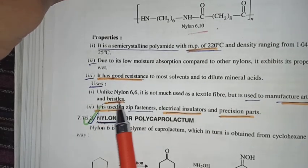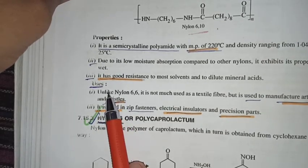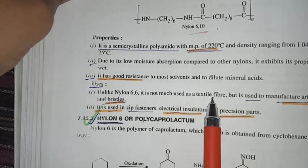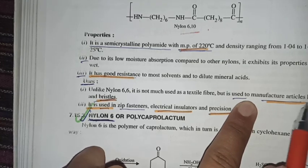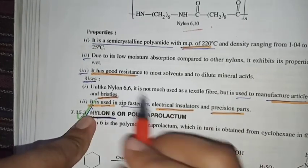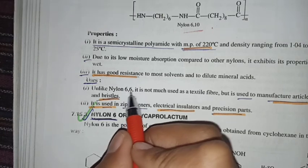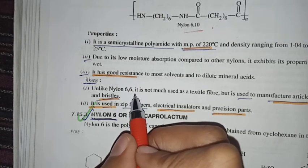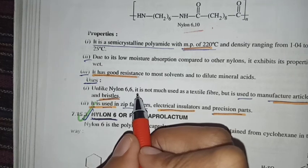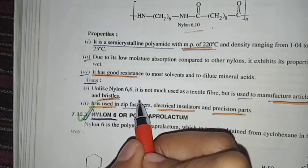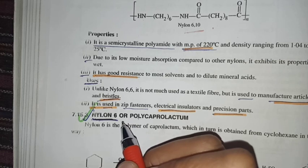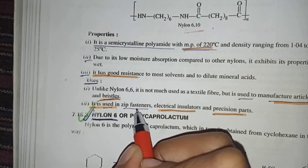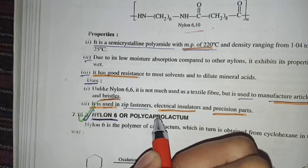To use, unlike nylon 6,6 is not much used in textile fiber, but it is used to manufacture articles like brushes and bristles. What does this mean? That nylon 6,10 is not used in textile fiber, mostly used but we have brushes and bristles used.